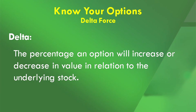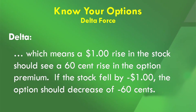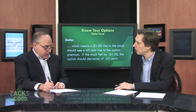Let's look at some slides here. The definition of Delta as it applies to options is the percentage an option will increase or decrease in value in relation to the price movement of the underlying stock. For example, a Delta of .60 or 60% means the option will move or change in value equal to 60% of the underlying stock's price change. A $1 rise in the stock should see a $0.60 rise in the option premium. Seems easy, actually.